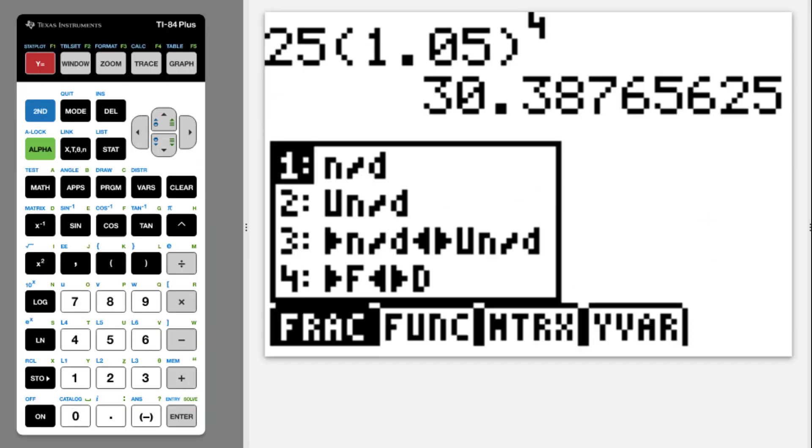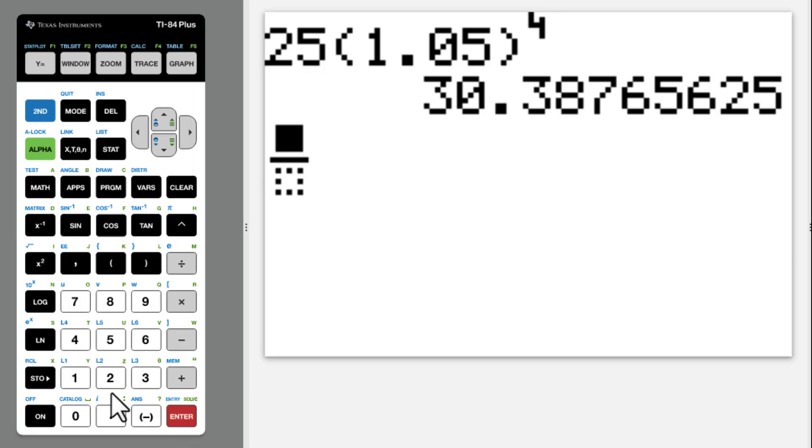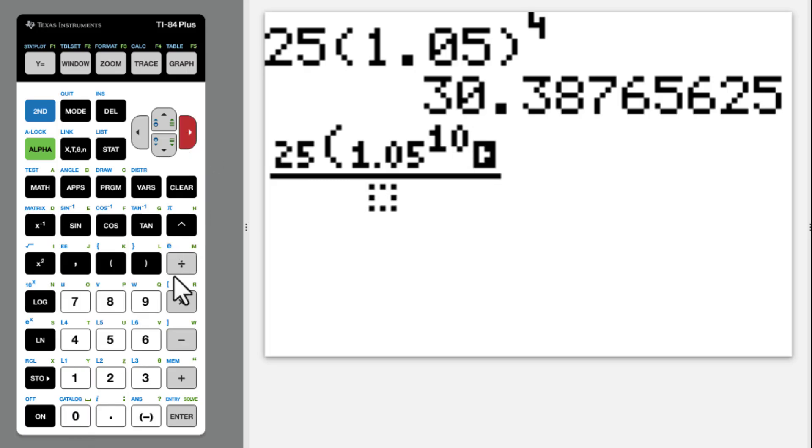25 times 1.05 to the tenth power minus 1 over 1.05 minus 1. Go to calculator. Alpha Y equals 25 times 1.05 to the tenth power, then minus 1 over 1.05 minus 1. Enter.